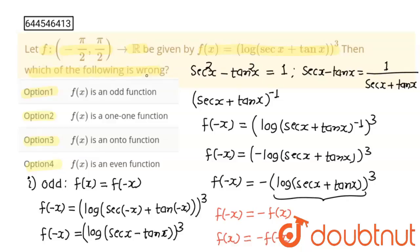But we have to find the wrong option. Since this function is odd, it cannot be even. So the wrong option will be the one claiming the function is even. Now we have to find whether this function is one-one or not.